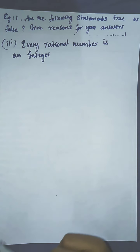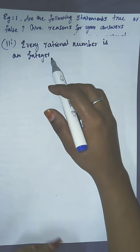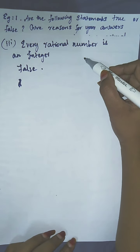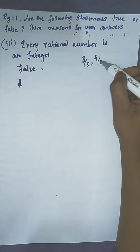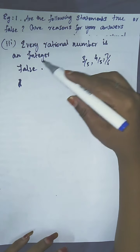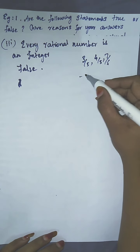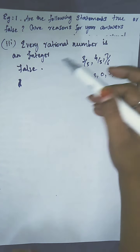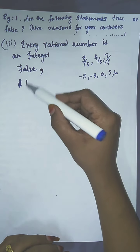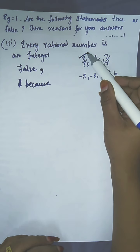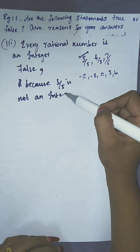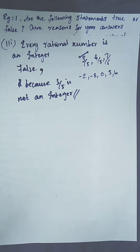Now statement number 3: every rational number is an integer. Actually the answer is false. The reason is a rational number can be like 3 by 5, or 4 divided by 5, or 7 divided by 6, and so on. An integer means numbers like minus 2, minus 3, 0, 5, 6, etc. So simply, 3 by 5 is not an integer. You have to mention whether the answer is true or false and give the reason.